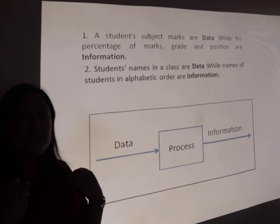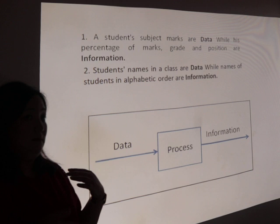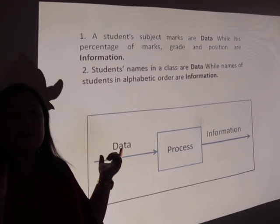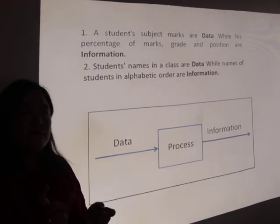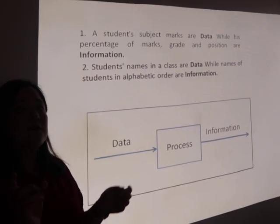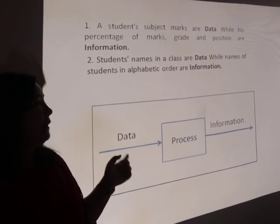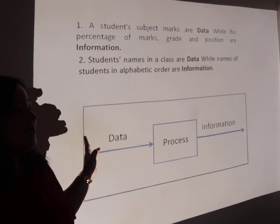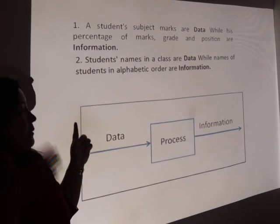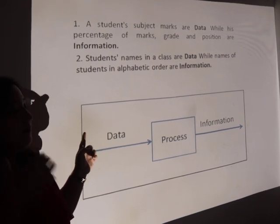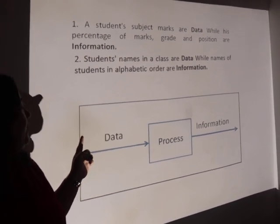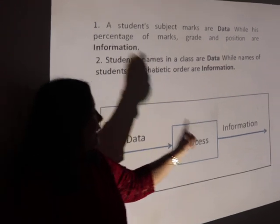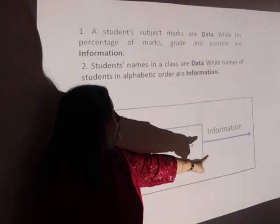After a dinner at a hotel, we get a receipt. In that receipt, we see various variables like the names of food items, quantities, prices, and the date. These variables are all data. The hotel manager will add up the prices of the items and give you the receipt, which is the end product — that is the information.